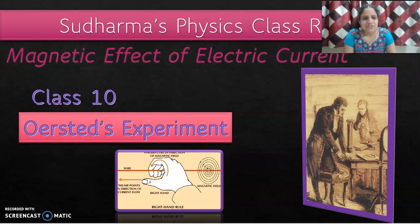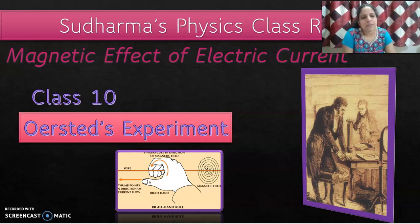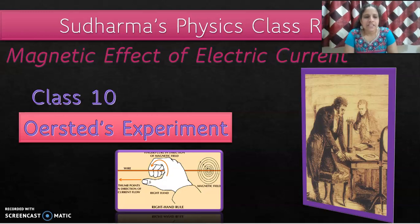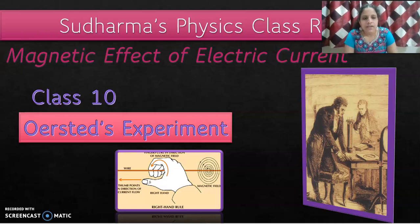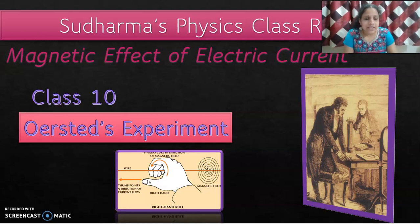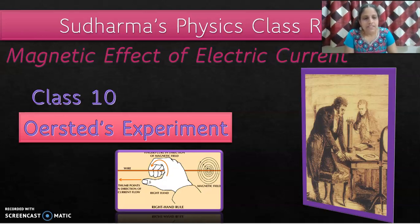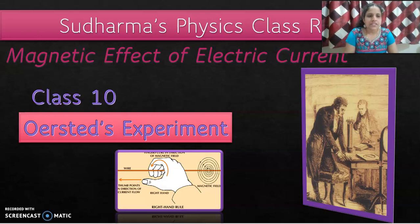Welcome all my dear students to Sudharma's physics classroom. Today I am here with a very interesting topic from magnetic effect of electric current from class 10. In the previous video we learned about basic magnetism concepts and terms related to magnetism. Today we are entering into the magnetic effect of electric current — how electric current passing through a conductor produces magnetism.